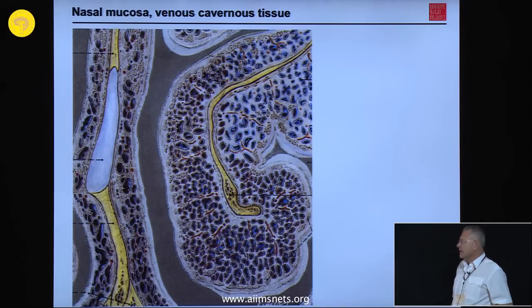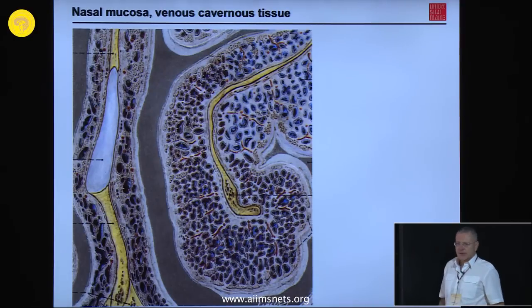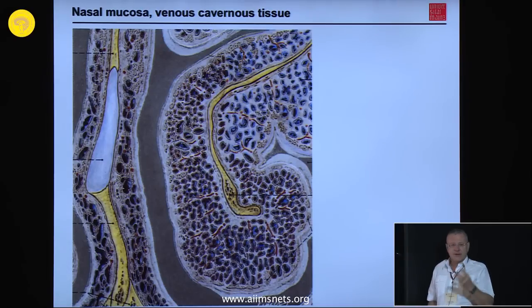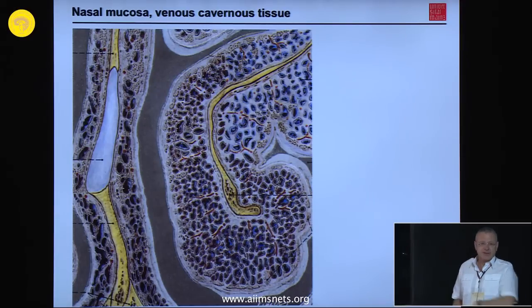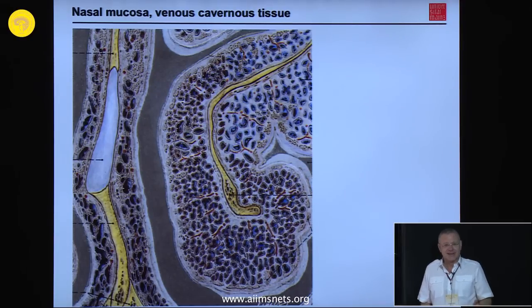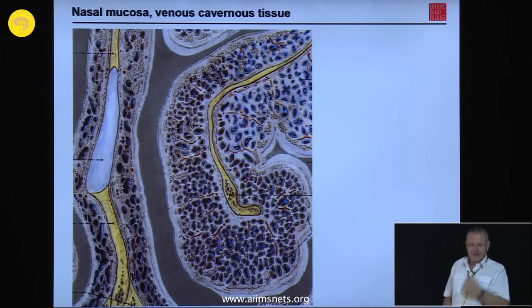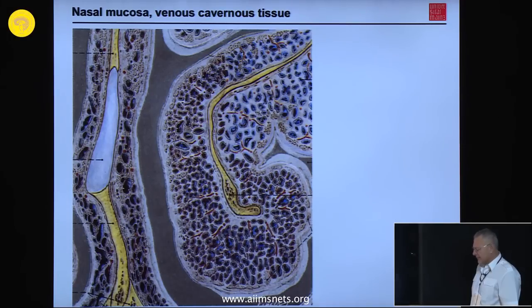Unlike in the genitals where we have arterial cavernous tissue, this is venous cavernous tissue — we do not need high pressure here, but we do need considerable fluid transport. You notice this most when lying on your side during sleep: only one nostril is open, the other is obstructed by swelling of this cavernous tissue. When you turn over, within about two minutes the venous swelling decreases and the other nostril opens — it is highly reactive tissue.